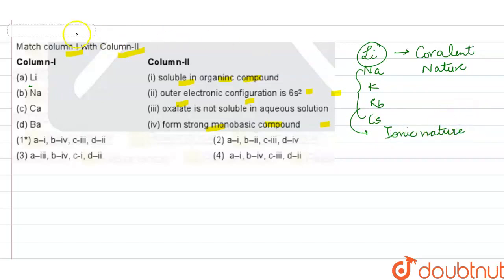According to Fajan's rule, which deals with charge upon size, lithium's size is small and the charge is the same. The covalent character is higher as compared to the other elements of the group.